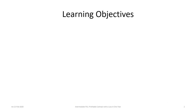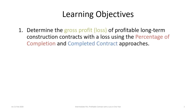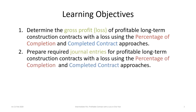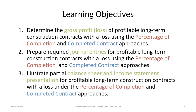We have three learning objectives for this tutorial. First, to determine the gross profit of a profitable long-term contract with a loss using the percentage of completion and completed contract approaches. Second, as with previous tutorials, we will be looking at the journal entries for the profitable contract with a loss using both approaches. And finally, illustrate how to prepare a partial balance sheet and income statement presentation for profitable long-term contracts with a loss, again under both percentage of completion and completed contract approaches.